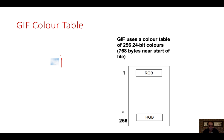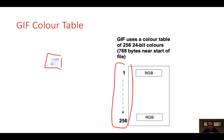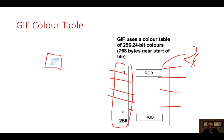In GIF we have a color table — the global color table has only 256 entries, which can be 24-bit entries of 3 bytes each. But you can only have 256 colors in the table, which is fine for images with very few colors but really not good for photographs.